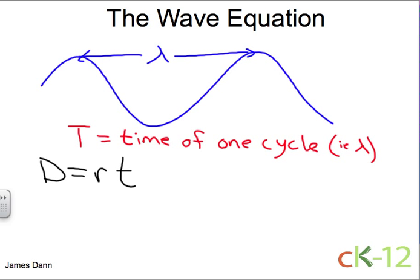And so we just put in the distance, which is a wavelength, the rate, which is the speed of the wave, and then the time to cover one wavelength is the period T.